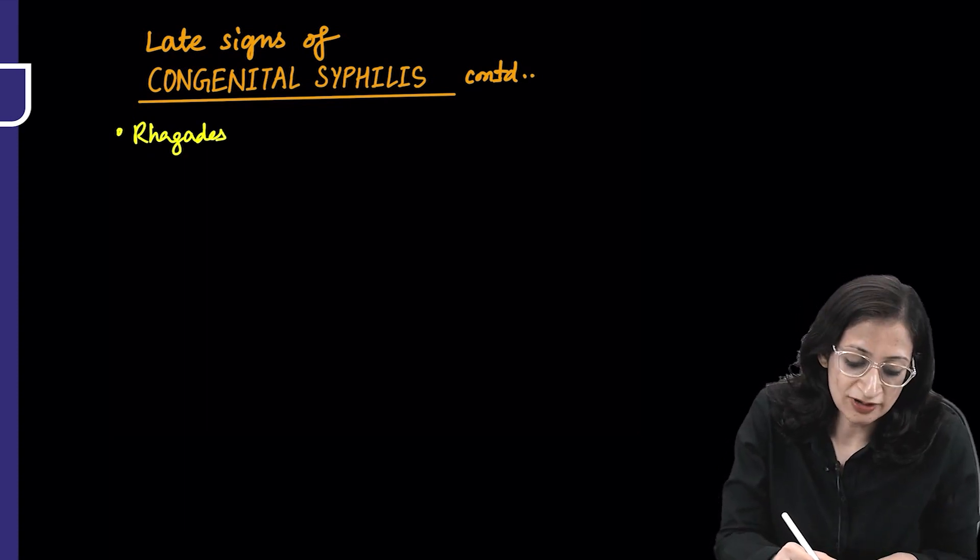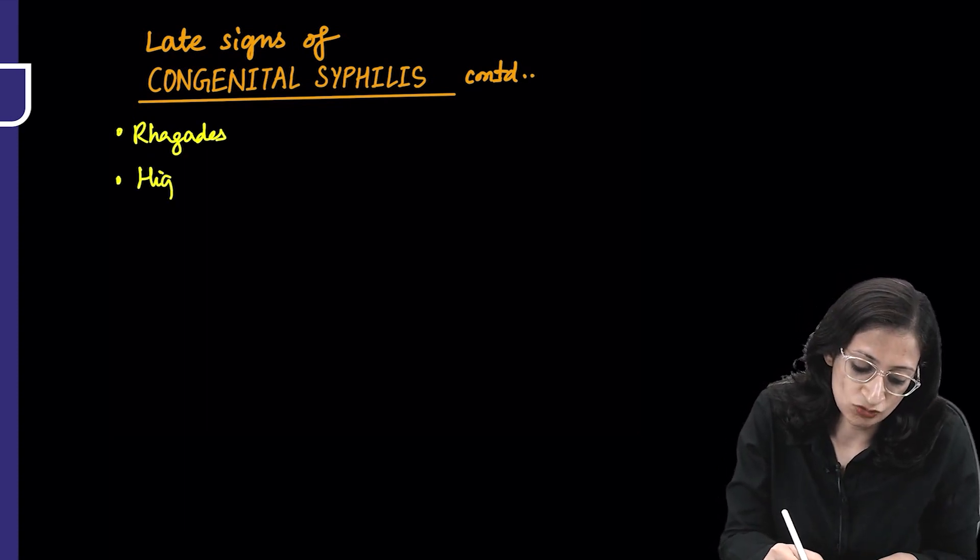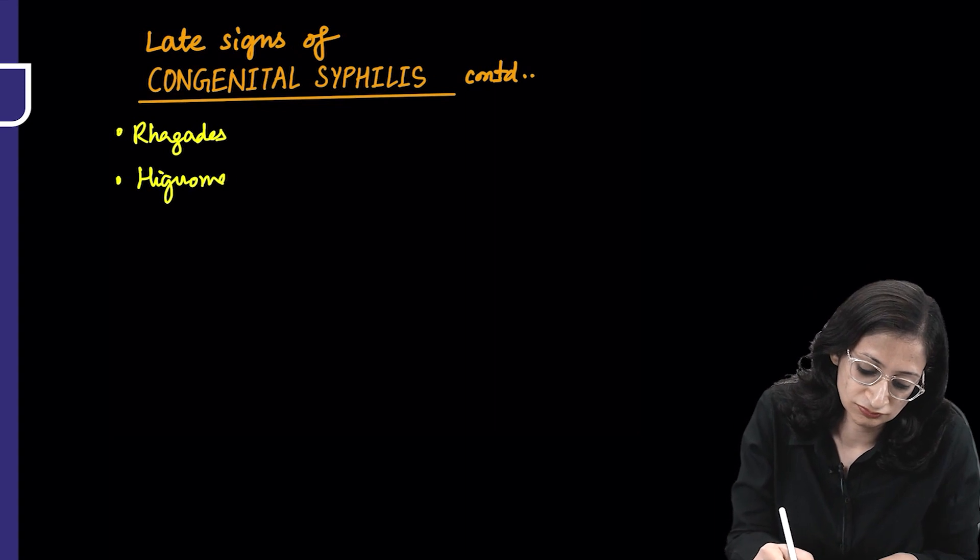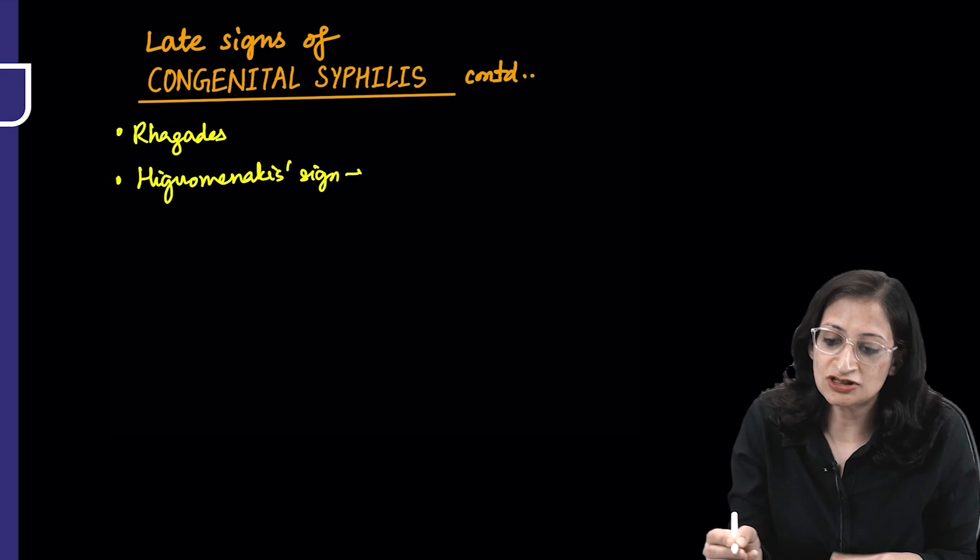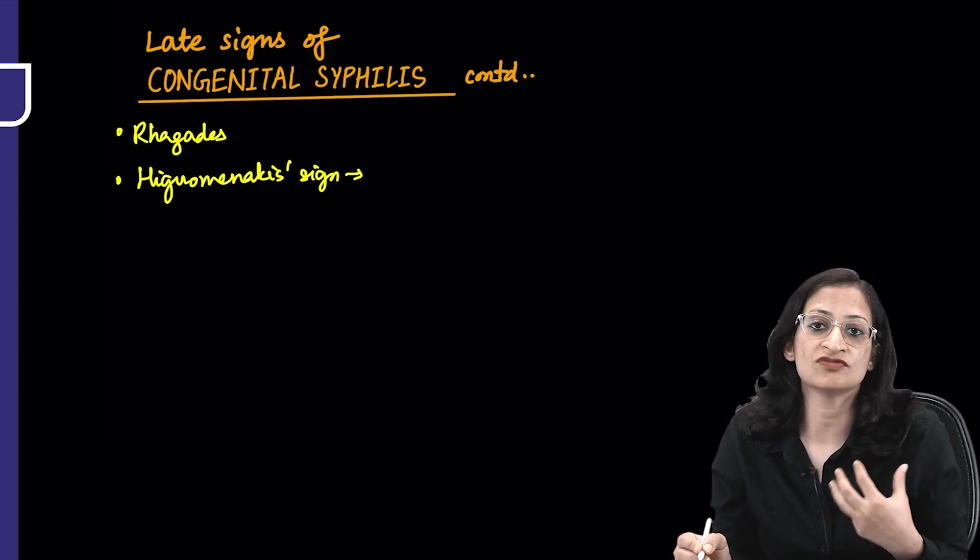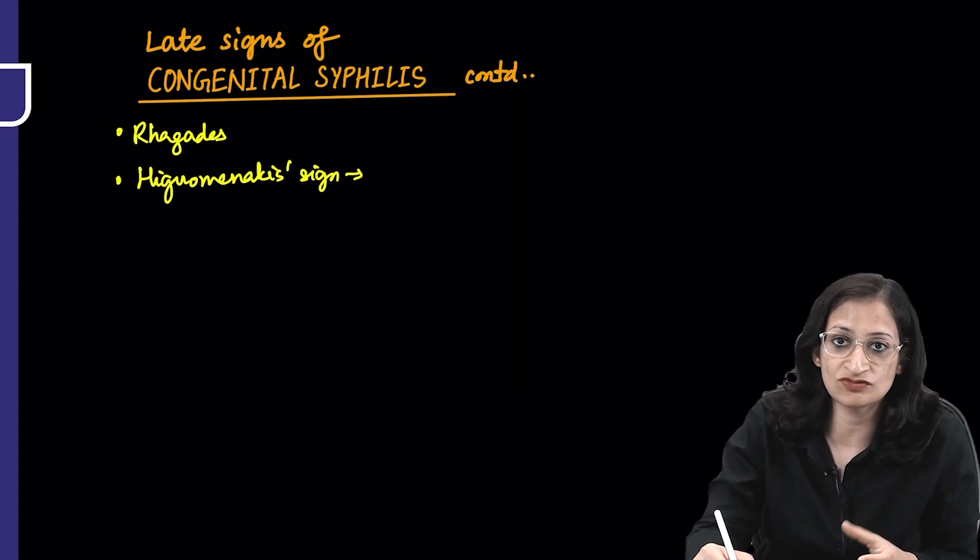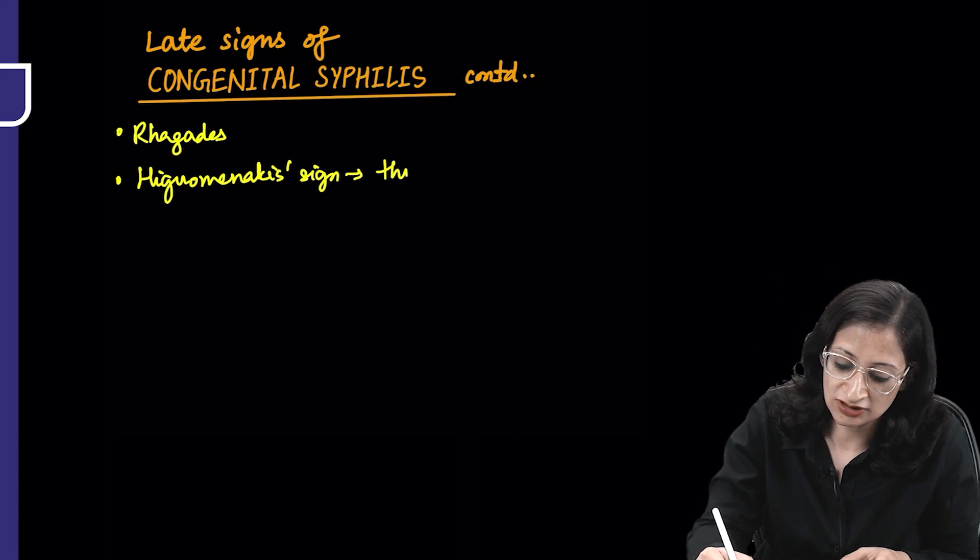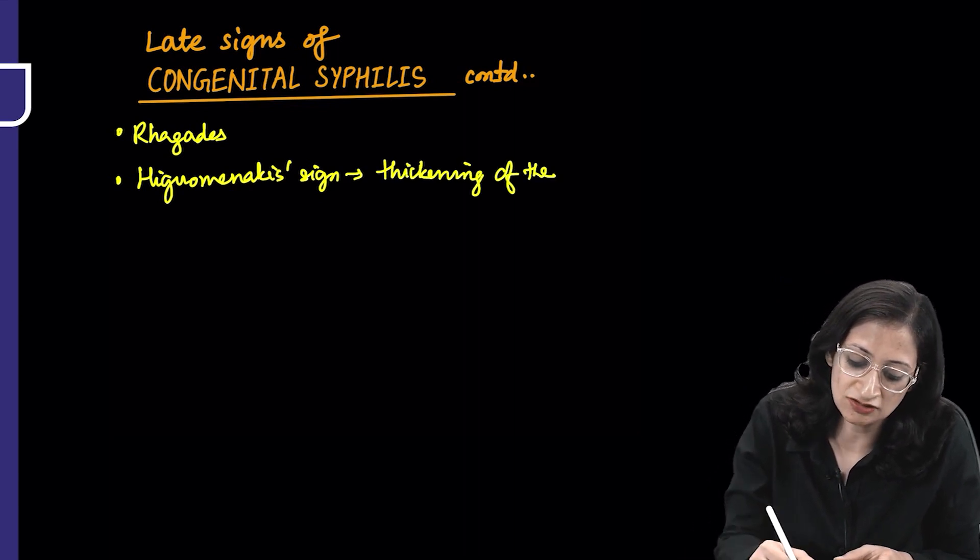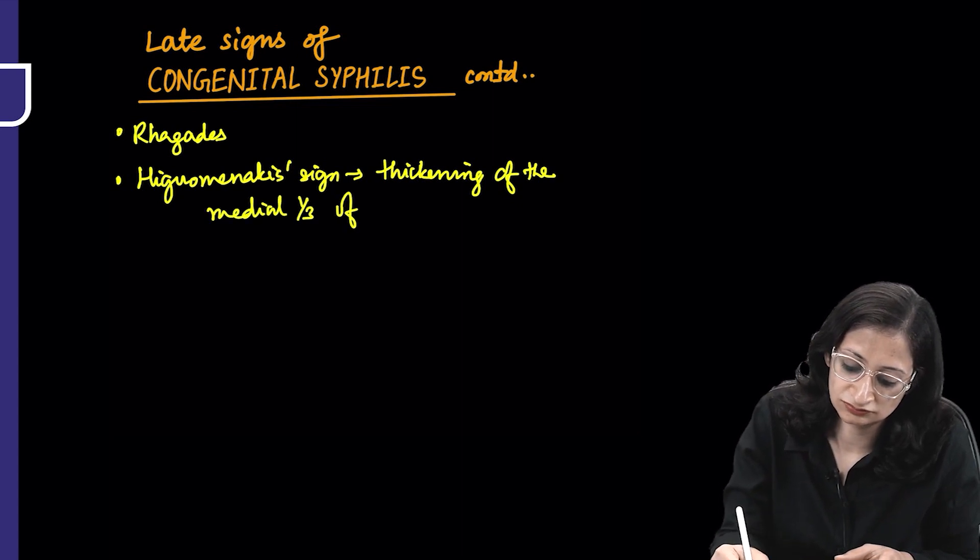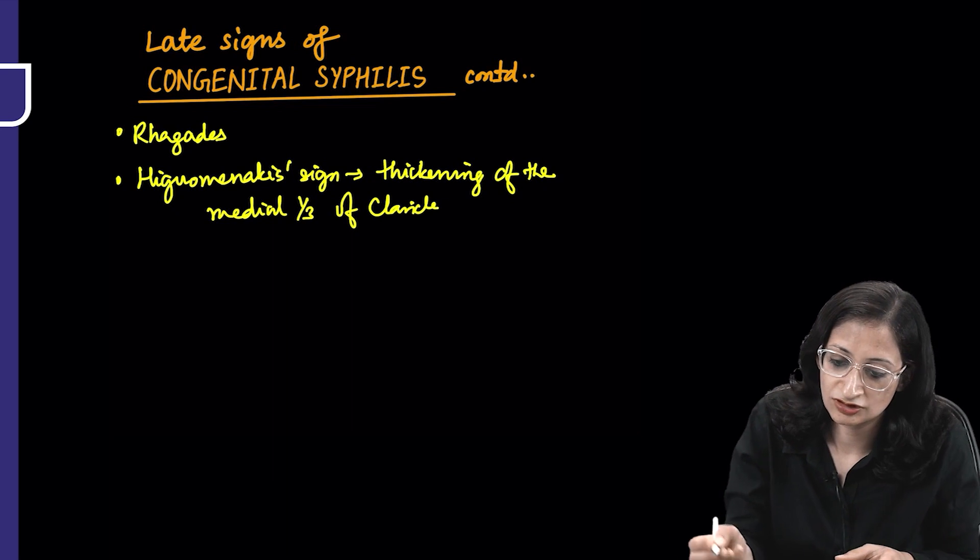Then there is something called Higoumenakis sign, which is nothing but the thickening of the medial one-third or the sternal end of the clavicle.